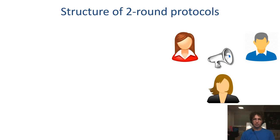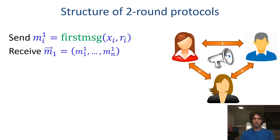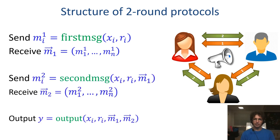We first recall the structure of two-round protocols. These are very simple protocols. At the beginning, every party computes its first-round message as a function of its input and random coins, and sends the message to all other parties. Given all of the first-round messages and its input and coins, the party computes its second-round message and sends it to all. Finally, given all first-round and second-round messages, its input and its coins, the party can compute the output.